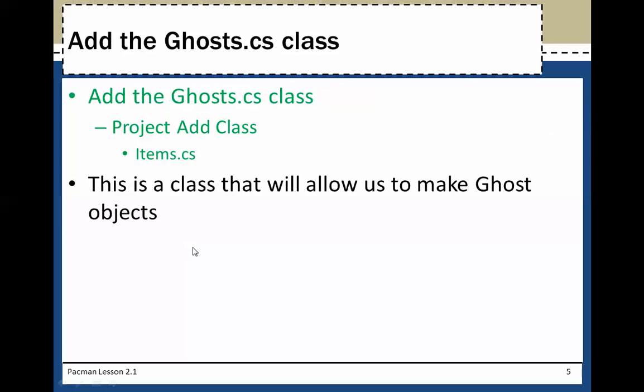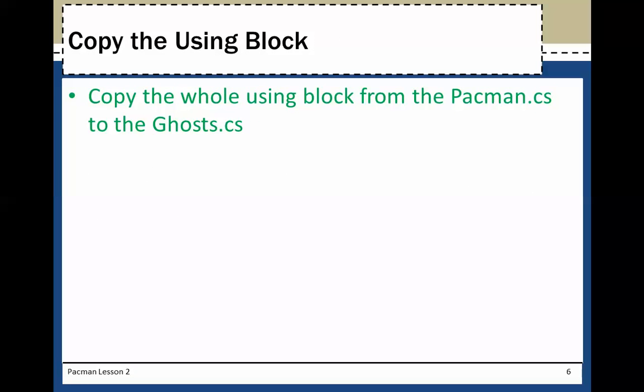We're going to add a Ghost class. Go to project, add class - not items.cs - I should say ghost.cs. We're going to add the ghost class. This is a class that will allow us to make ghost objects. I can show you how to do that, and then copy the whole using block from Pac-Man to the ghost.